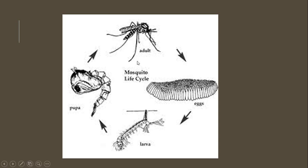Let's sum up Culex mosquito. Adult mosquito features consist of big wings and present in a hunchback position. Eggs are clustered and raft-like. Larvae is a bottom feeder with a siphon present.